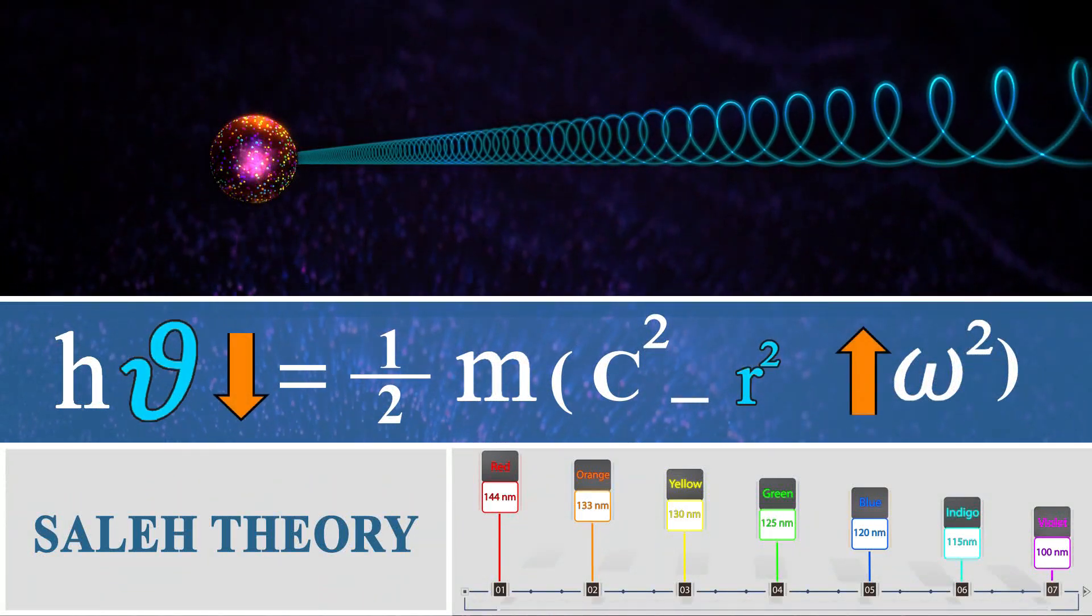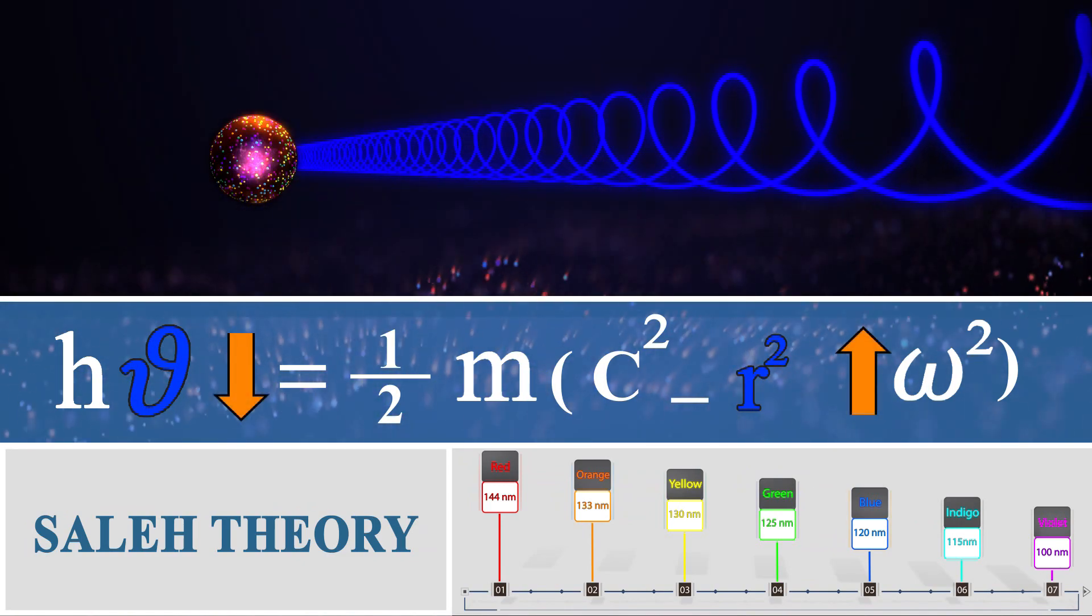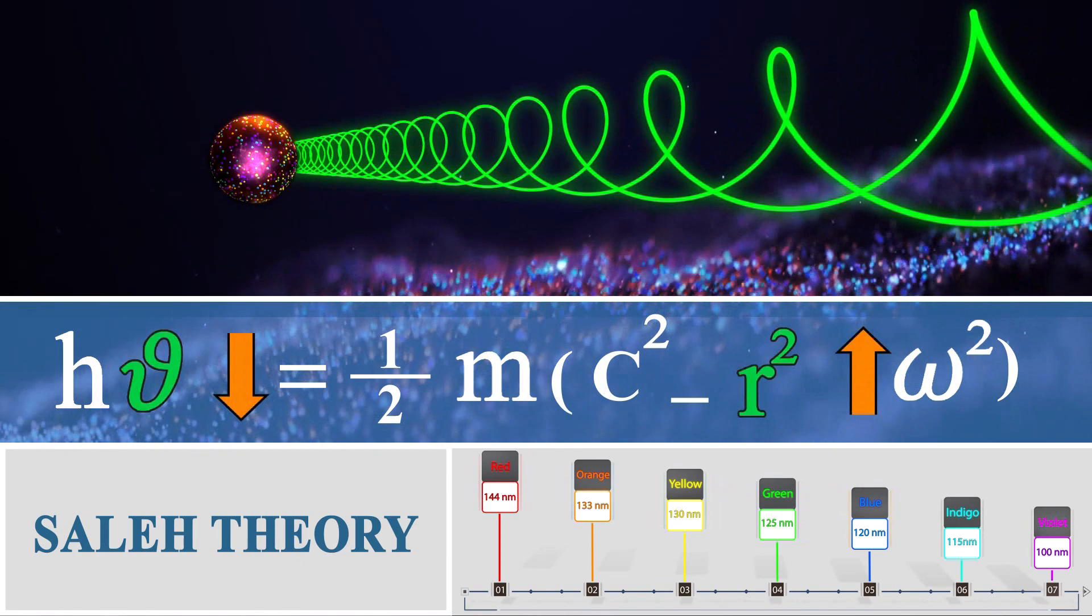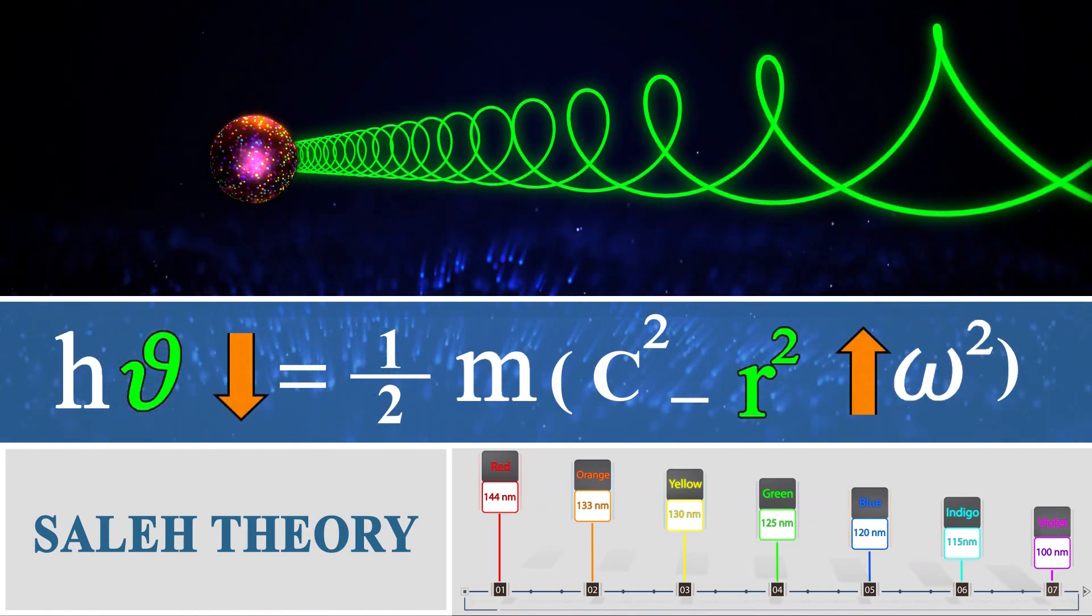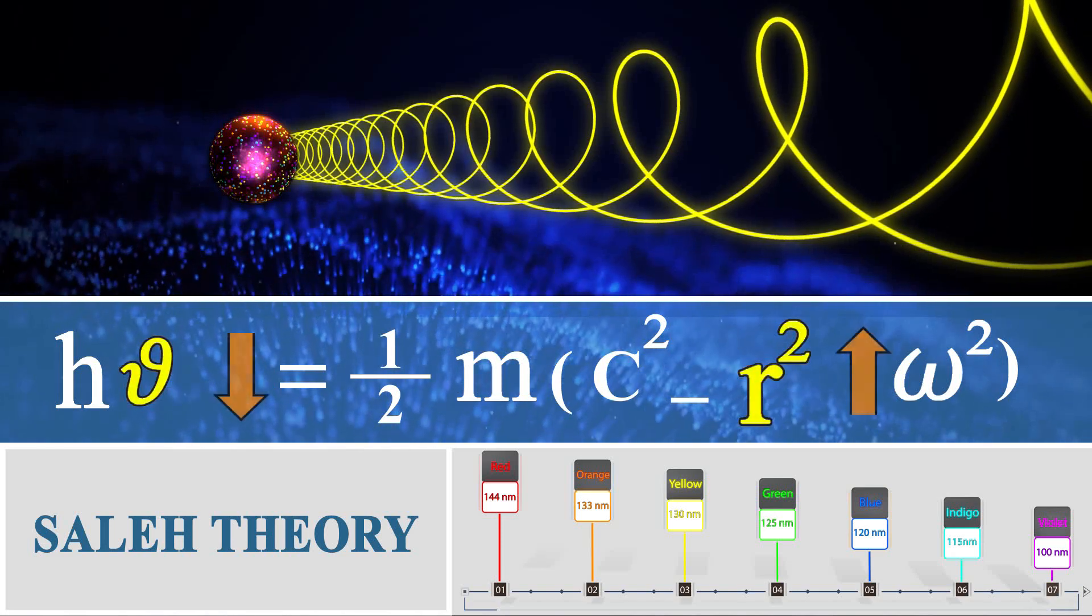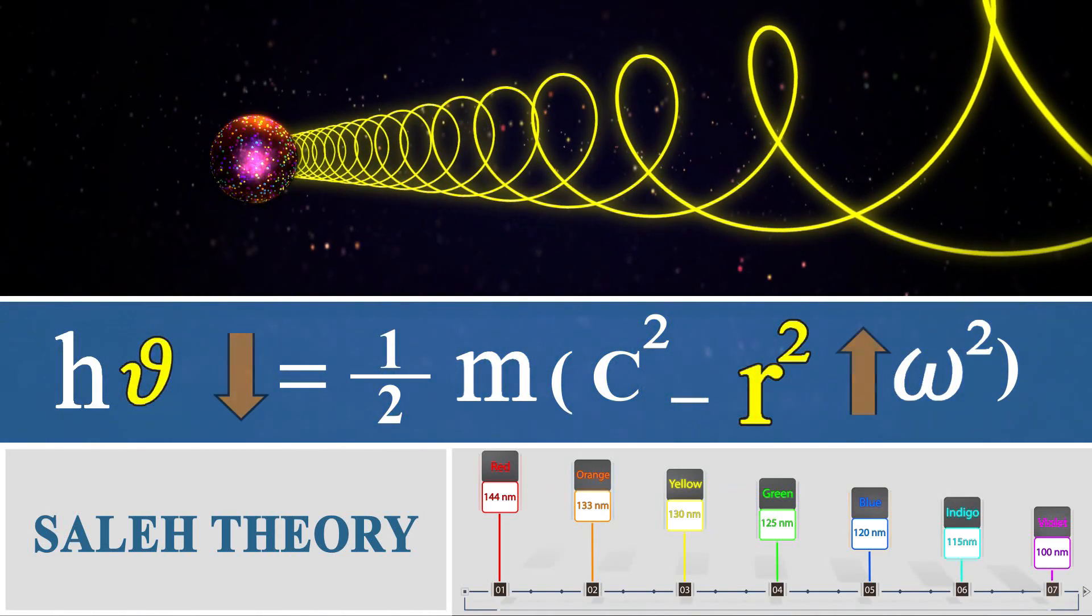In Saleh theory, the red light has more rotational energy due to its larger rotation radius than the blue light. And as a result of the transfer of this energy to our eyes, we feel the red light warmer and stronger.